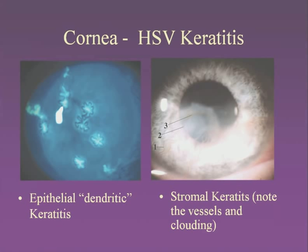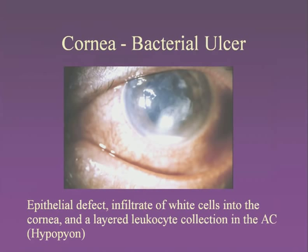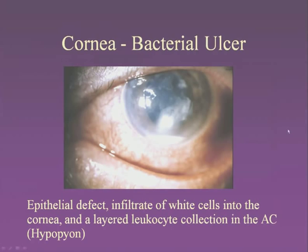When blood vessels grow into the cornea, you know something's wrong — you will lose transparency. Here's epithelial and stromal keratitis side by side. Here's a contact lens ulcer: when the cornea is infected you get an infiltrate — a white spot — similar to what you might see on a chest X-ray. You can also see layering within the anterior chamber called a hypopyon — a collection of white cells, neutrophils, or debris settling by gravity in the bottom of the anterior chamber. A hypopyon usually signals endophthalmitis, which is vision-threatening.